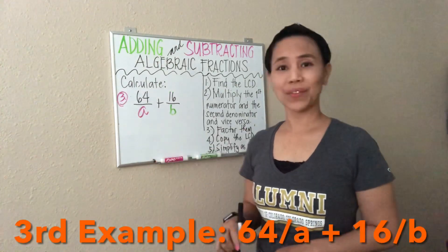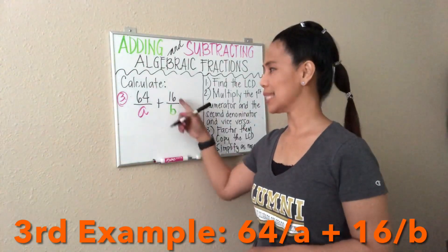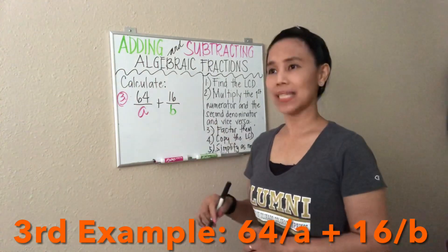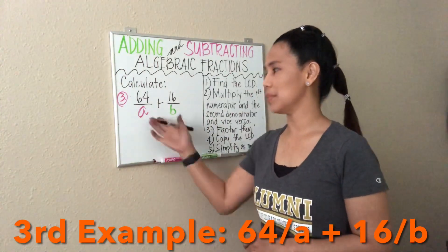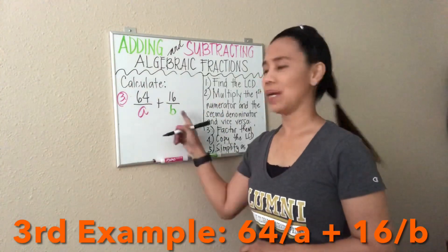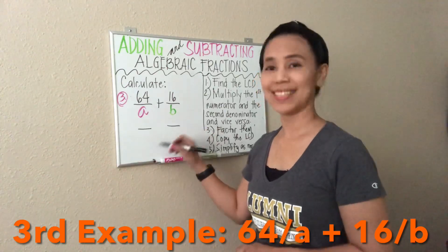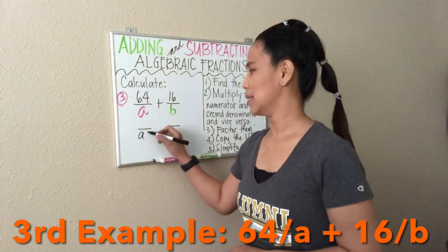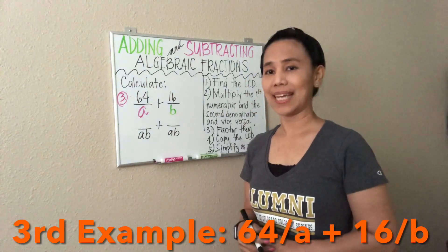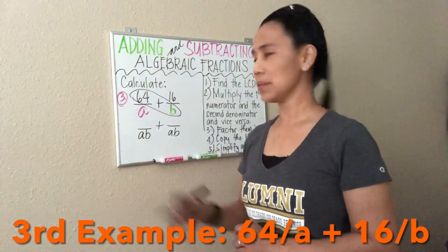Let's have this third example. What if we have 64 over A plus 16 over B? The same thing — we have to find the LCD because they have different denominators. A quick way: we just multiply the denominators. A times B is AB. So we set AB as the common denominator on both sides, and we are adding.